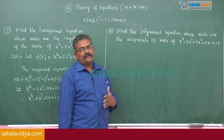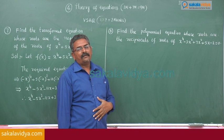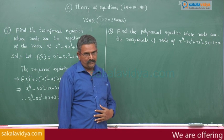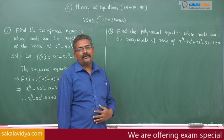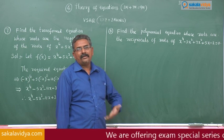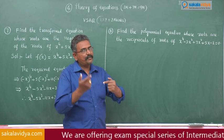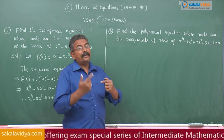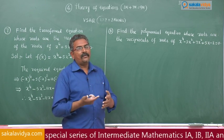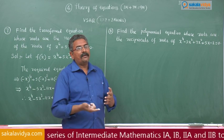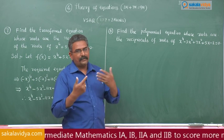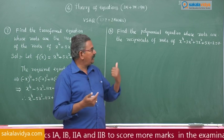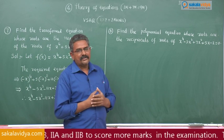Suppose the roots of the given equation are alpha 1, alpha 2, alpha 3, alpha 4. We have to find a polynomial equation whose roots are their reciprocals — that means their multiplicative inverses: 1 by alpha 1, 1 by alpha 2, 1 by alpha 3, 1 by alpha 4. We can follow one strategy: consider the corresponding polynomial f of x, and find f of 1 by x equal to 0 to get the required equation.